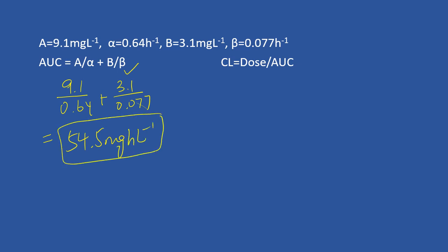The next part requires you to calculate the clearance. You use this equation: put in the dose, which is 200, divided by AUC, which is 54.5. The clearance will be 3.67 liters per hour.